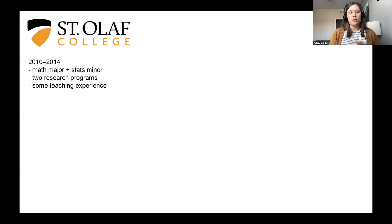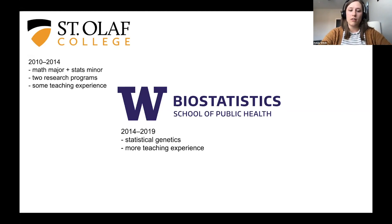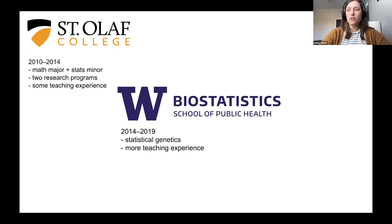I ended up applying to a mix of statistics and biostatistics programs and ultimately ended up at the University of Washington in their biostatistics department. At UW I continued doing research in statistical genetics, which I had started as an undergrad, and ended up doing my dissertation in that area. I picked up more teaching experience working with both graduate and undergraduate students, which really helped cement that I did want to be a professor.